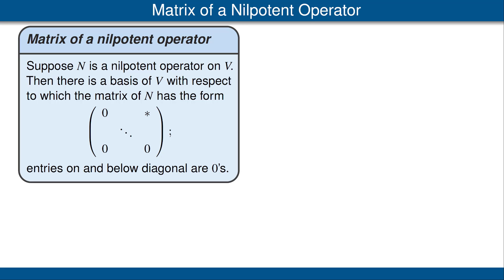Remember that upper triangular means all the entries below the diagonal are zero, so in this case we have all the entries below and on the diagonal are zero.